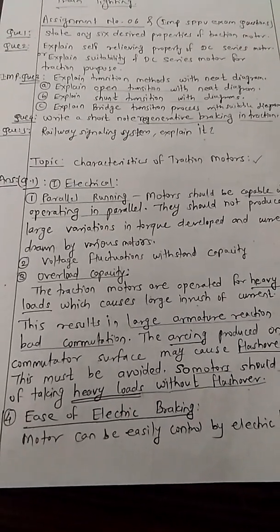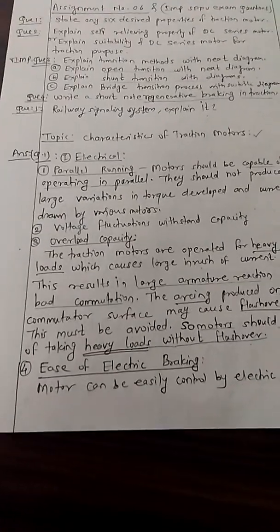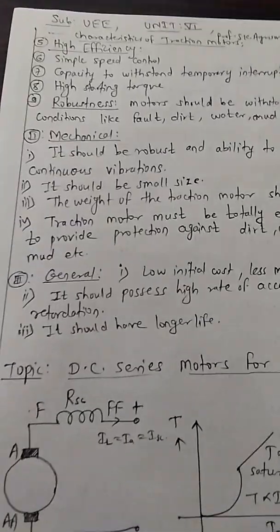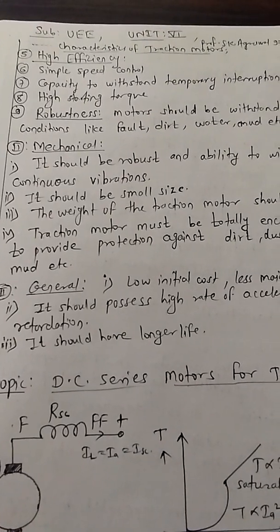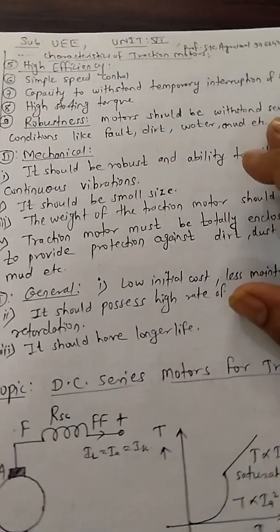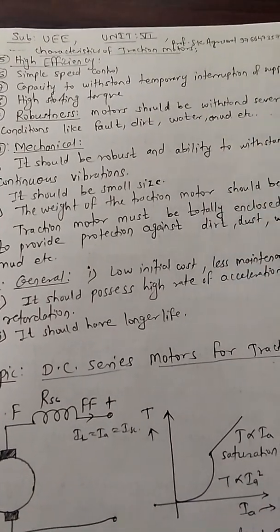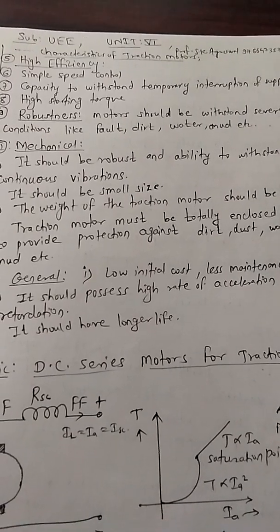Voltage fluctuation withstand capacity should exist in the traction motors. Ease of electric braking. High efficiency. Simple speed control. High starting torque. Robustness means motor can withstand full condition, dirt, and water.